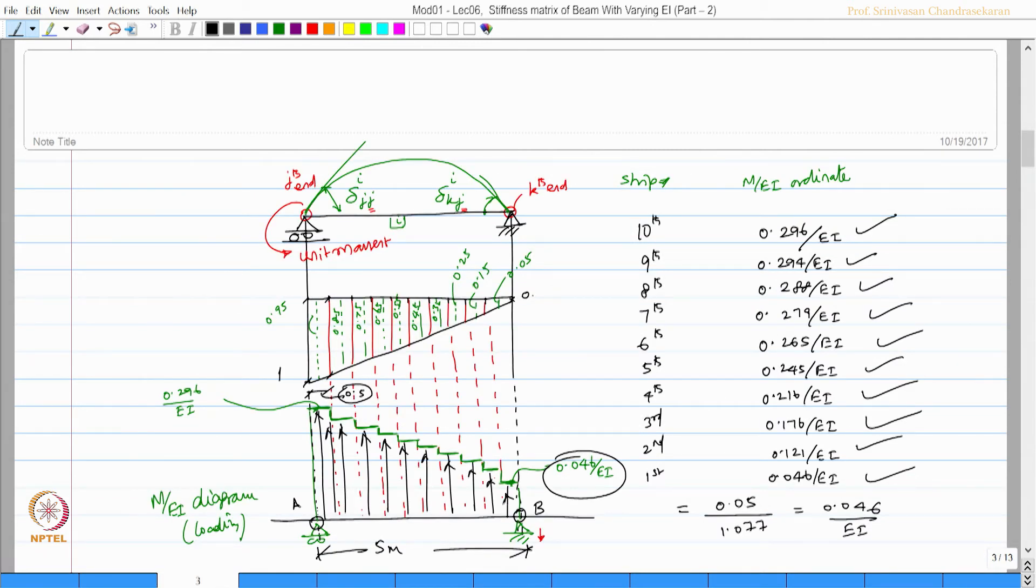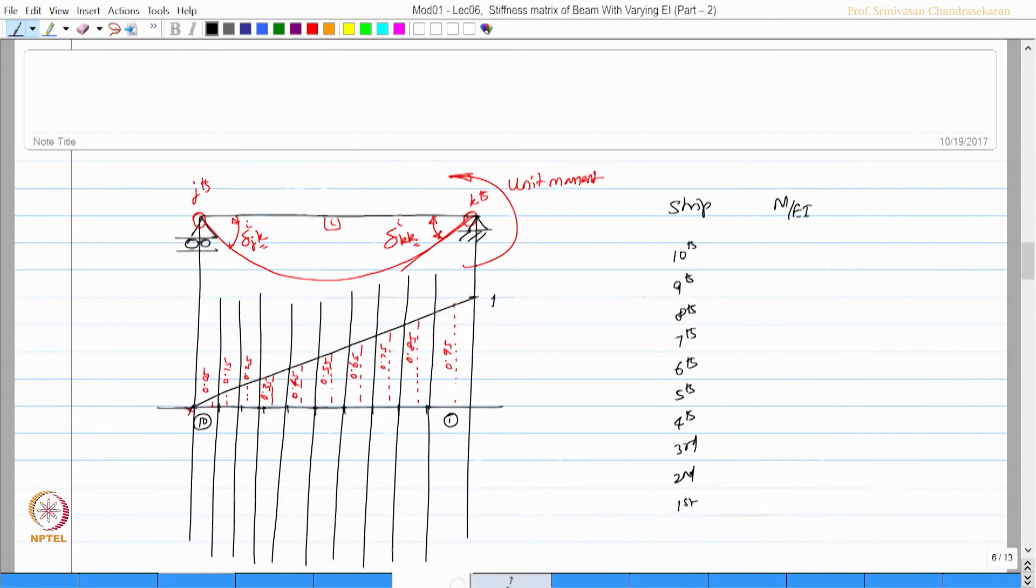For example, I want to find this value. I can always say the moment divided by the corresponding I value. Similarly, here this value will be 0.882 by EI. I will leave this homework to you to calculate this; it is very simple to do. 0.684 by EI, 0.527 by EI, 0.401 by EI, 0.293 by EI, 0.217 by EI, 0.15 by EI, 0.096 by EI, 0.052 by EI, and 0.016 by EI.